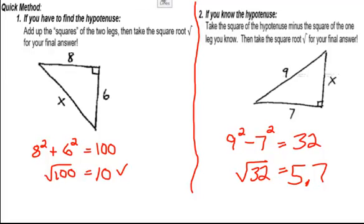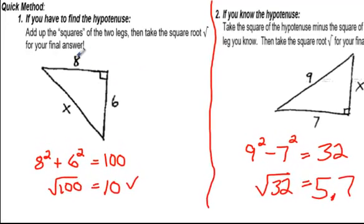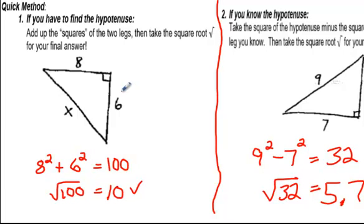Hi everyone, what I want to show you here today is just a really quick method for situations where you have the Pythagorean Theorem, and where you need the Pythagorean Theorem. And the reason why you need it is you're given two sides of a right triangle, and you're supposed to find the third side.